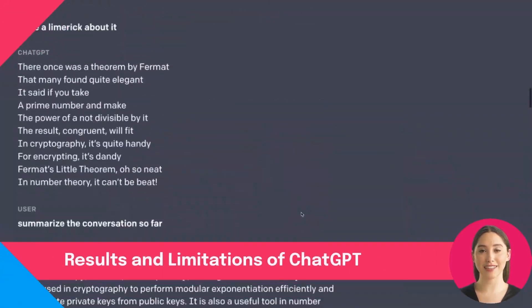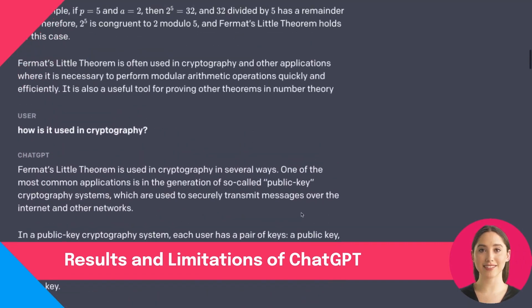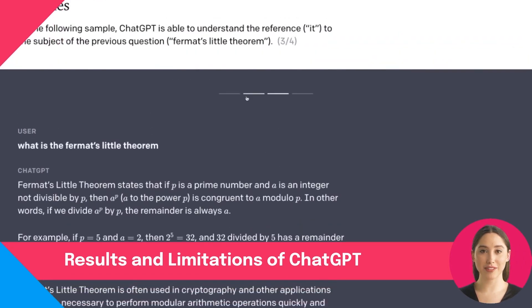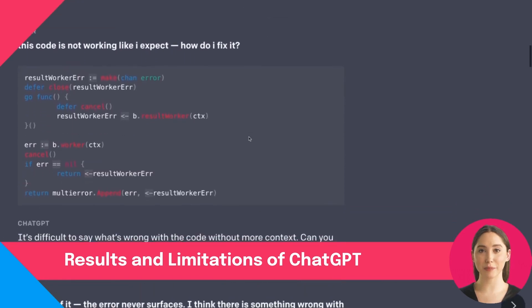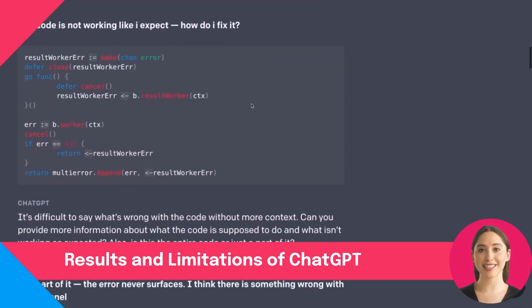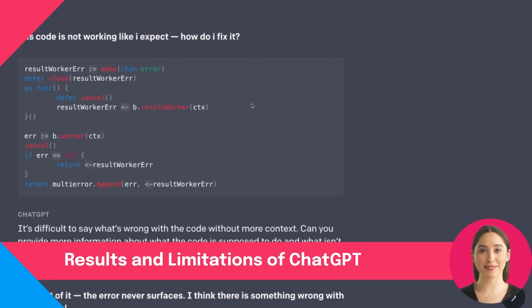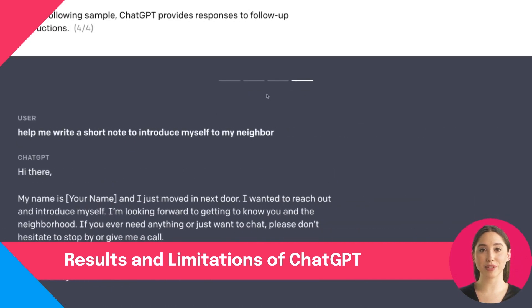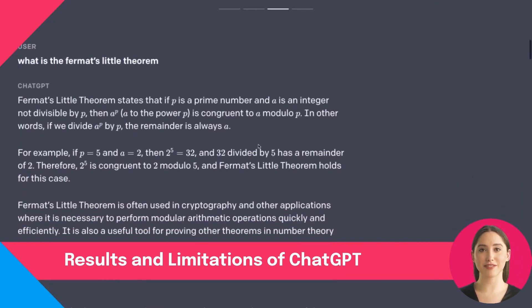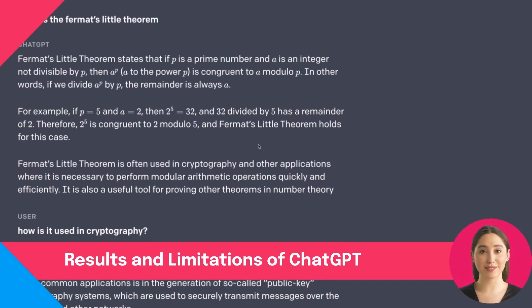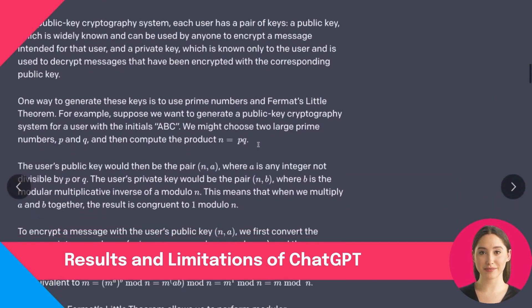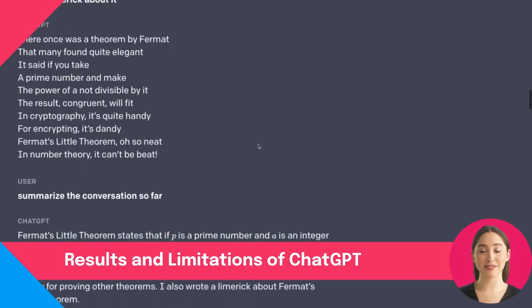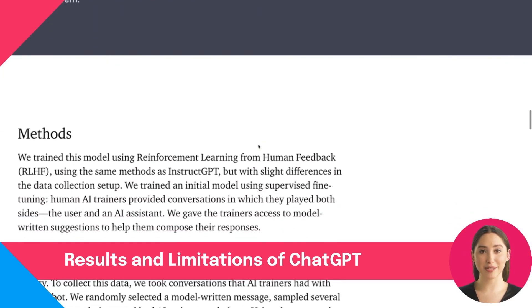ChatGPT achieves impressive performance that seems far superior than previous GPT series. It can answer complex questions about the world, generate and solve coding questions, write creative text, give clarifications, and many other things. Here we have an example where ChatGPT gives a fluent description of a theorem and then answers follow-up questions about the use of the theorem in cryptography. ChatGPT really feels like a big improvement from the previous iteration.